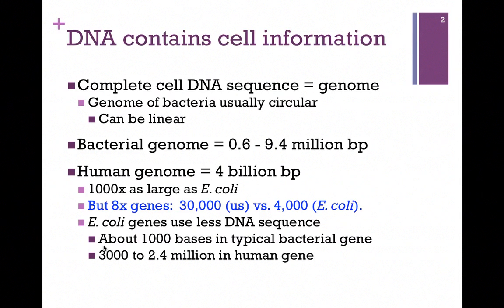We only have eight times the number of genes. For humans, that's 30,000 genes, and for E. coli, that's 4,000. So what's the difference? The E. coli genes use less DNA sequence. If we compare similar genes, the gene in E. coli would contain fewer DNA base pairs than the human form of the gene — about a thousand bases in a typical bacterial gene, and 3,000 to up to almost two and a half million in a human gene. We'll see the reason for this size difference a little bit later.